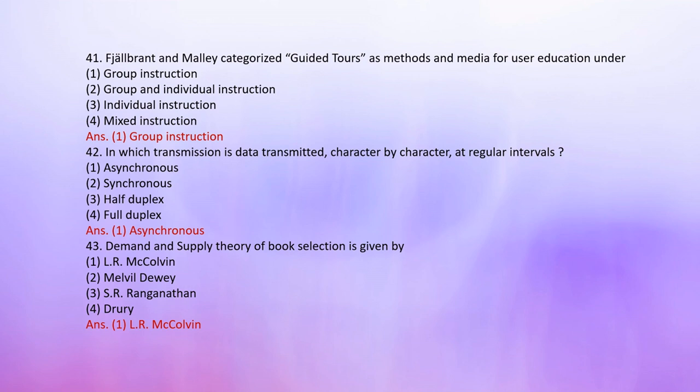Number 43: The demand and supply theory of book selection is given by: 1. L.R. McColvin, 2. Melvin Dewey, 3. S.R. Ranganathan, 4. Truri. The correct answer is 1: L.R. McColvin.